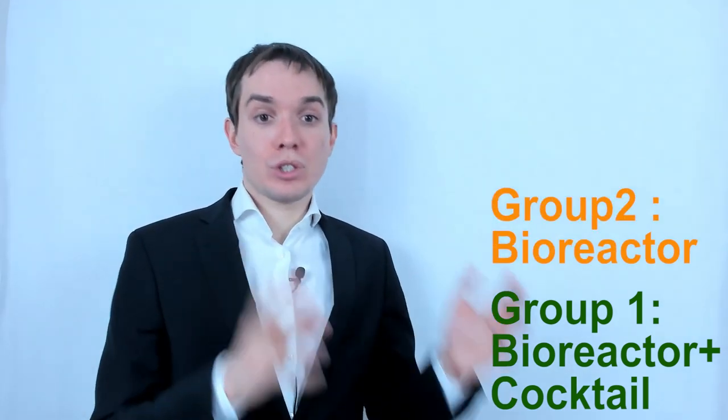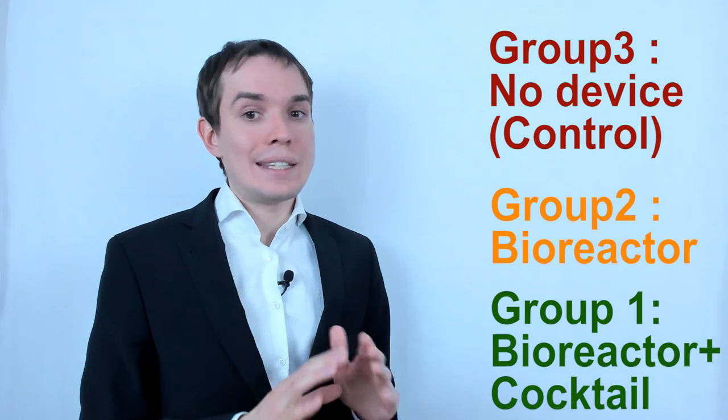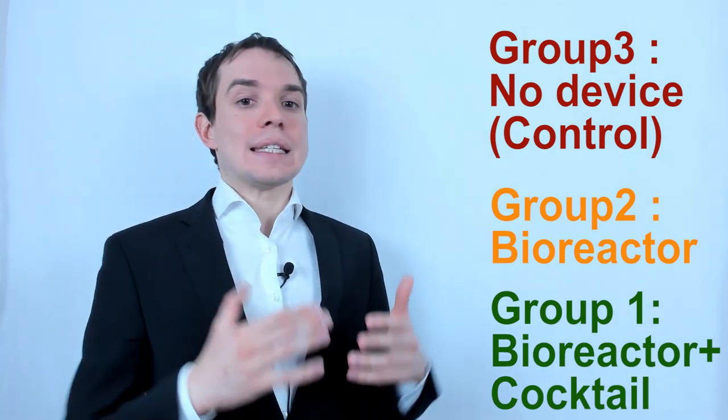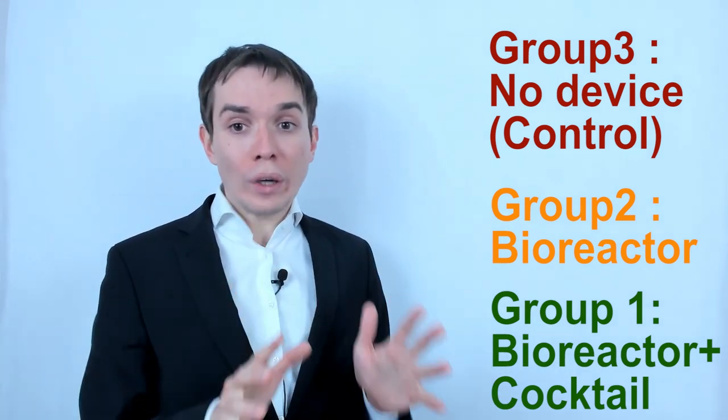Animals were given an anesthetic and limbs were amputated. Then the animals were divided into three groups. In one, the remaining part of the limb was put into bioreactor supplied with regenerated cocktail we just discussed. In the second, the reactor was used without the cocktail. And the frogs from the third group served as controls and didn't receive the treatment.